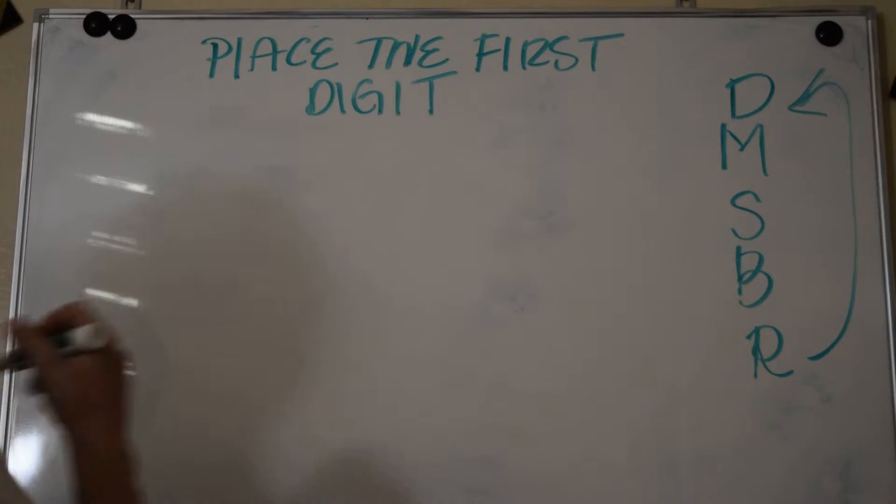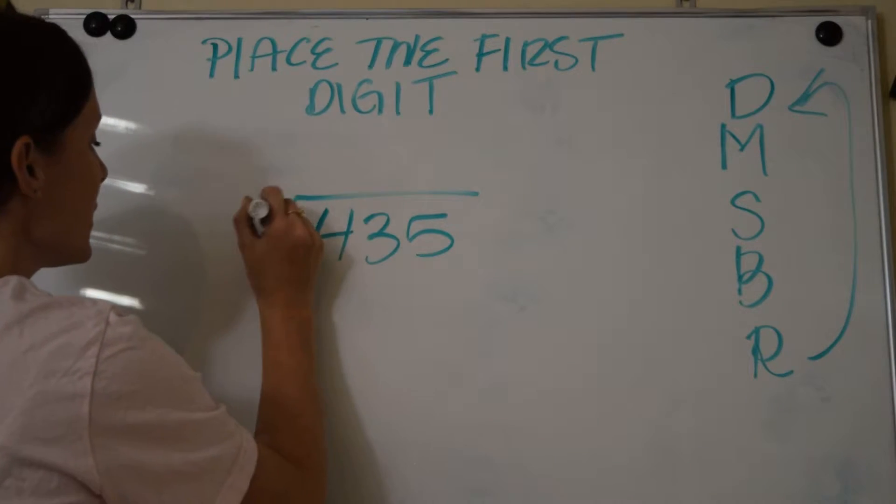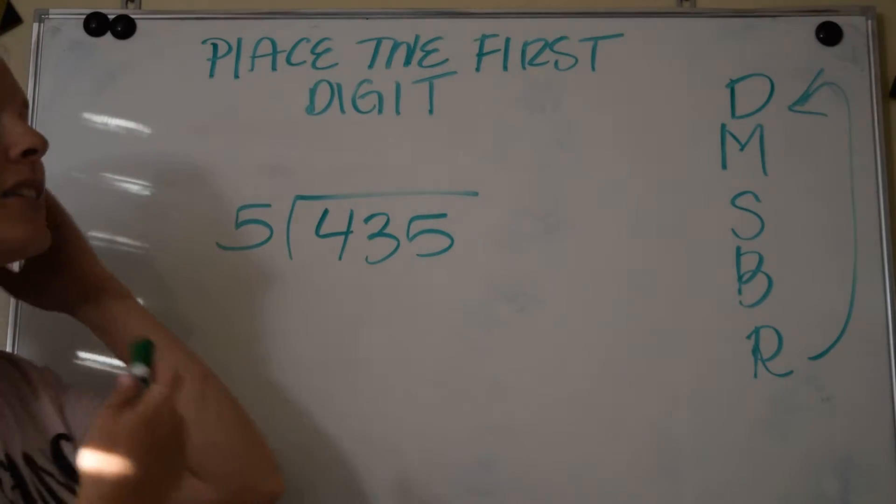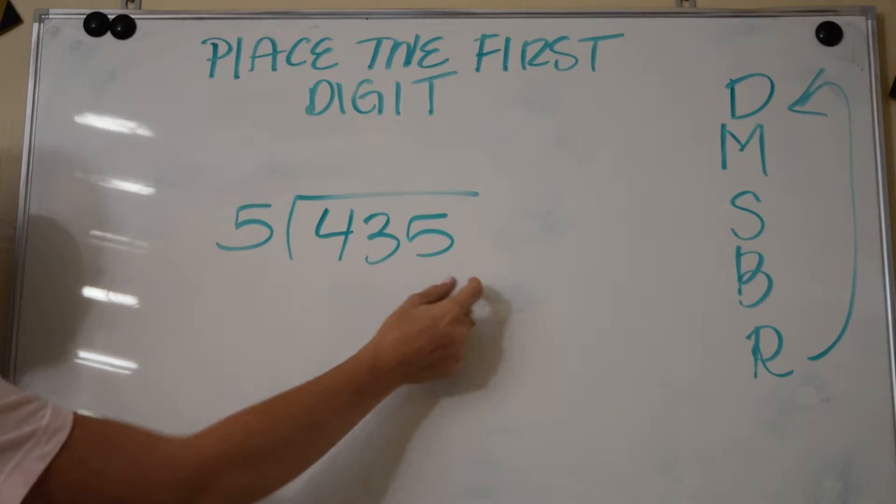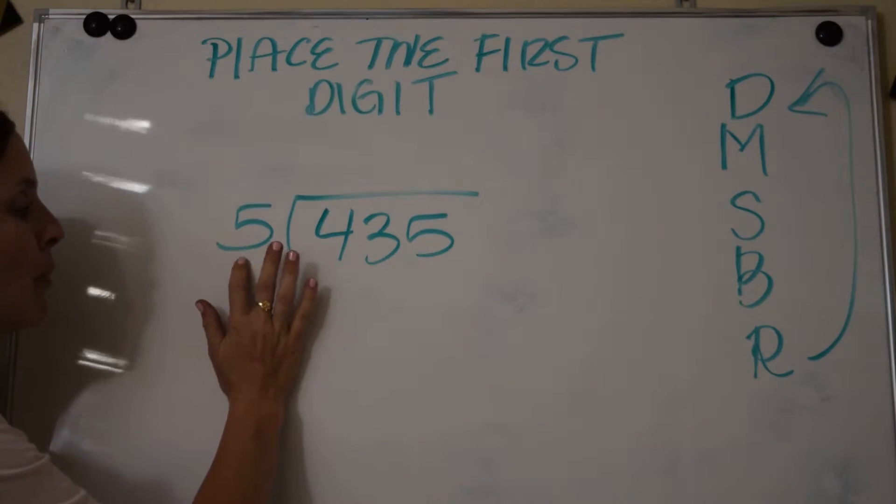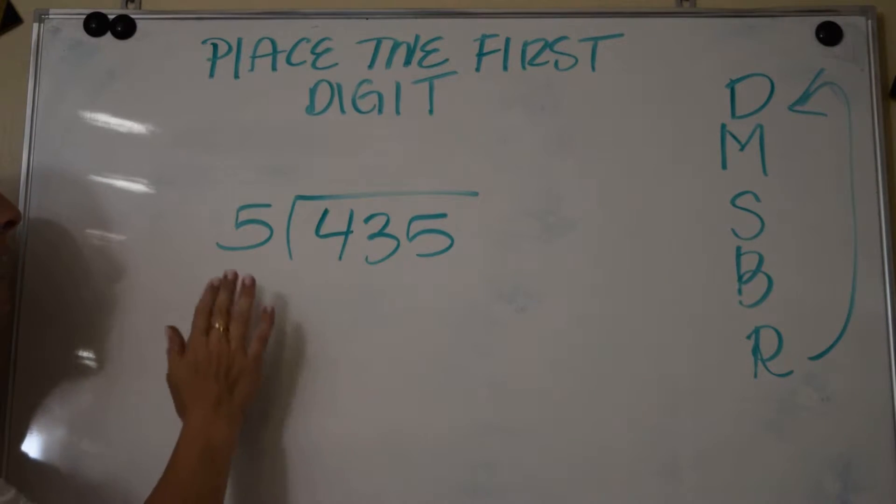435 divided by 5. So if you're following along in Bravo Hill, we are still in chapter 3. This is lesson 9, it's called 'place the first digit' because where do we put that first digit in our answer? Well, before we were able to go one digit at a time, but notice that we can't do that here. I can't put a 5 into a 4; 4 is too small.